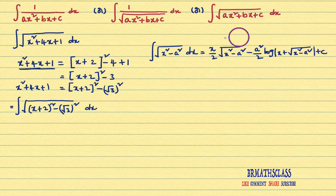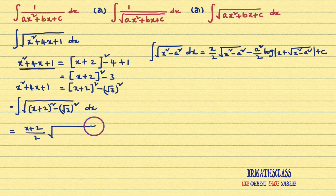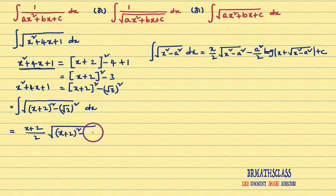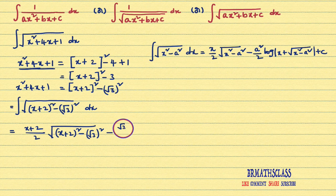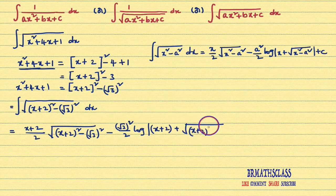Apply the formula: wherever x is there, write x + 2; wherever a is there, write √3. So the answer is (x + 2)/2 · √((x + 2)² - (√3)²) - (√3)²/2 · log|(x + 2) + √((x + 2)² - (√3)²)| + c. That is (x + 2)/2 · √((x + 2)² - 3) - 3/2 · log|(x + 2) + √((x + 2)² - 3)| + c.